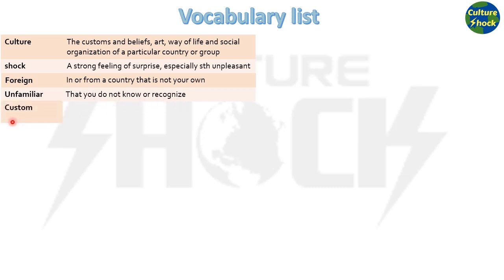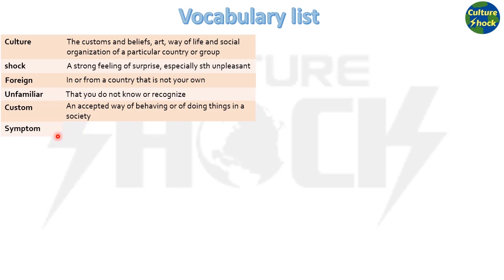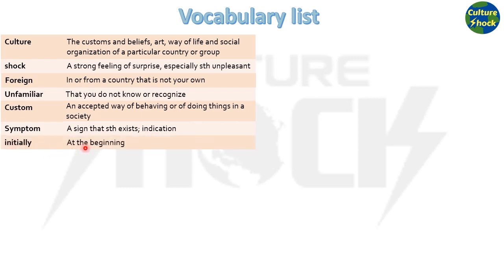Custom: an accepted way of behaving or of doing things in a society. Symptom: a sign that something exists. Indication. Initially: at the beginning. Familiar: well known to you, knowing something very well.